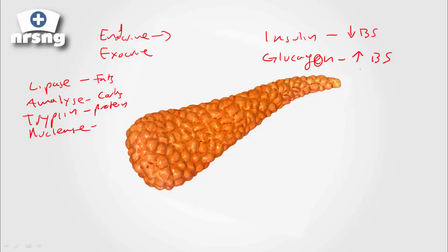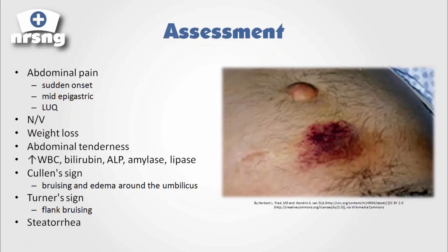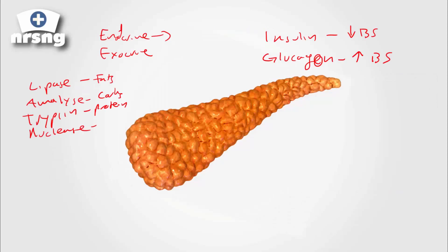If we lose function of the pancreas, we lose the ability to digest foods and to regulate blood sugars. The pancreas also helps with sodium bicarbonate to maintain acid-base balance. So the pancreas is an incredibly important organ.